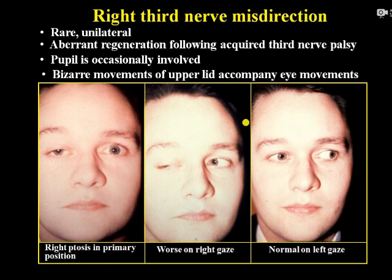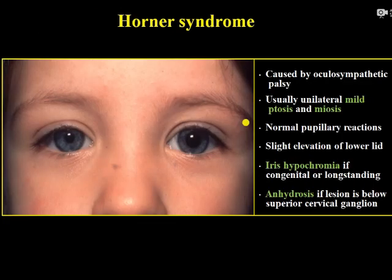There is also a condition known as third nerve misdirection. It is a rare, unilateral condition that usually occurs after third nerve palsy as an aberrant regeneration. After aberrant regeneration, when the patient moves their eyes, you will see bizarre movements of the upper lid as well, due to aberrant regeneration of the third nerve.